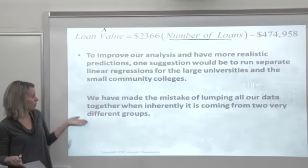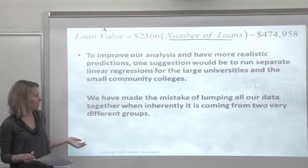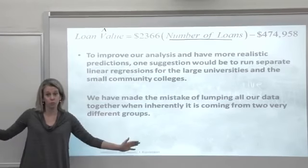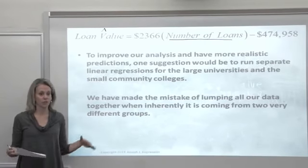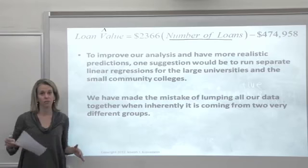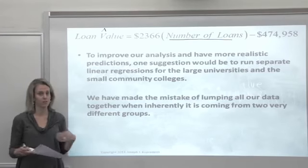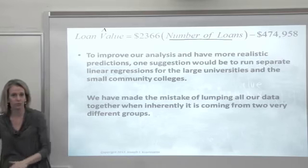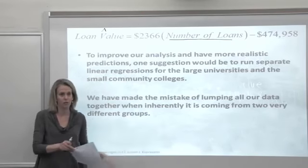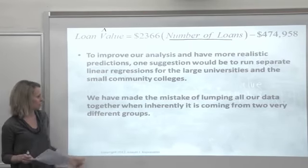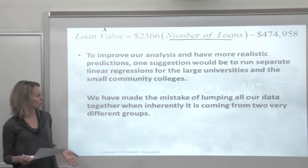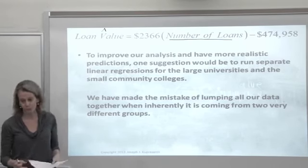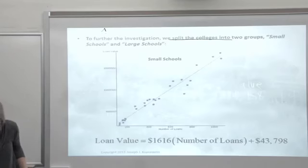We've made the mistake of lumping all of our data together when inherently it's coming from different groups. Sometimes you'll see that if you lump data together for males and females on a particular characteristic, perhaps you'd be better off to pick a certain model for just the females and a model for the males. Not always, but sometimes if your data come from different groups, it's good to separate those.